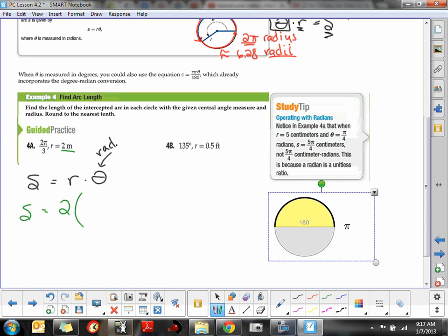This time they gave us the central angle, which is measured in radians, so we go 2 times 2π over 3 times the radius, which is 3. It may be helpful to put the 2 over 1, so that you can see when you multiply fractions, you multiply straight across. You've got 2 times 2, or 4π, divided by 3. So our arc length has a length of 4π thirds,